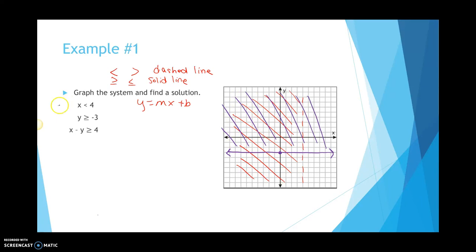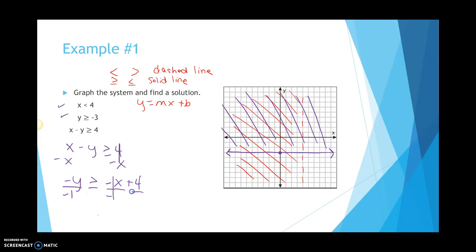Now let me graph the last one: x minus y is greater than or equal to 4. We want to get it into y equals mx plus b form, so I subtract x from both sides to get negative y is greater than or equal to negative x plus 4. To get a positive y, I divide everything by negative 1. Dividing by a negative means we flip the inequality sign to less than or equal to, giving us y is less than or equal to x minus 4.